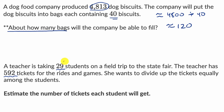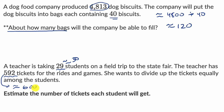So 29 is approximately 30. And 592 is approximately 600 — rounding to the nearest hundred. 600 and 30 are nice friendly numbers. 30 goes into 600 pretty cleanly. 60 divided by 30 is 2, so 600 divided by 30 would be 20. So approximately 20 tickets per student.